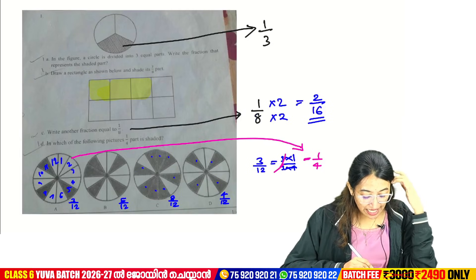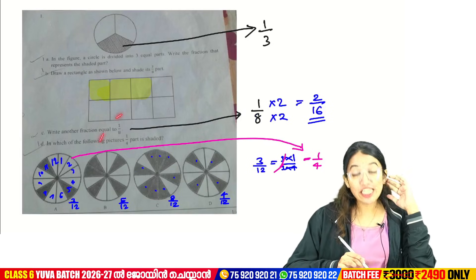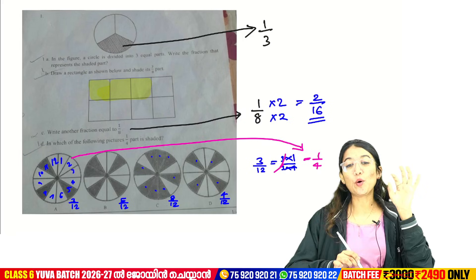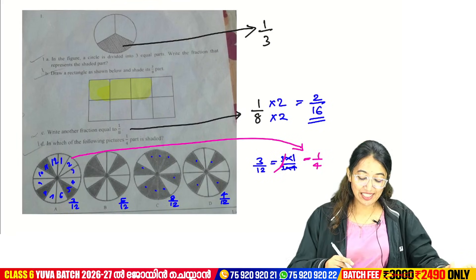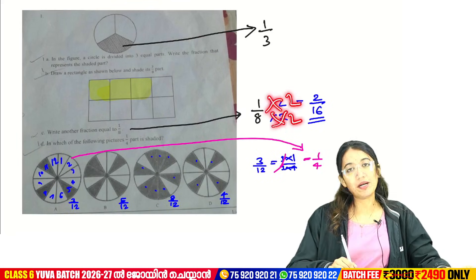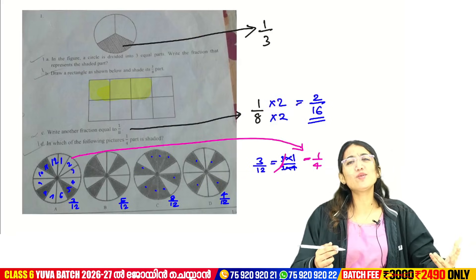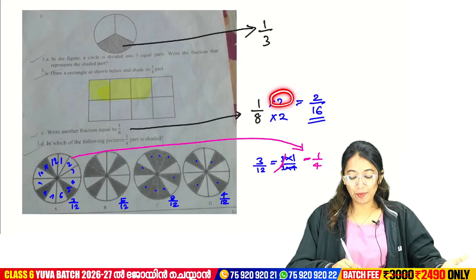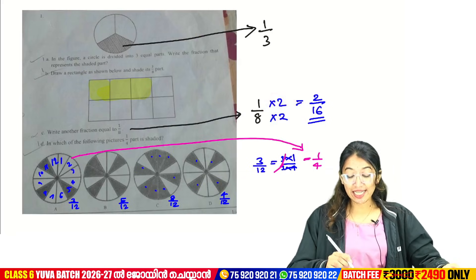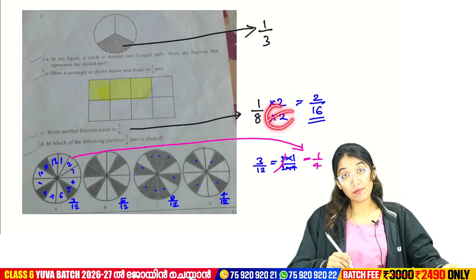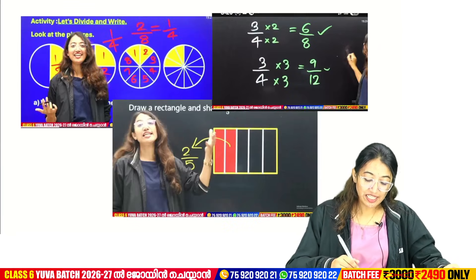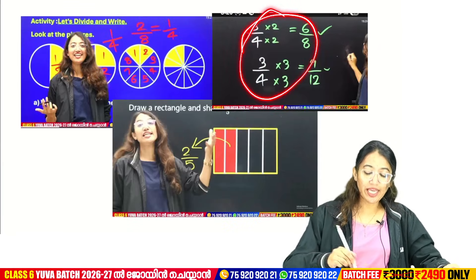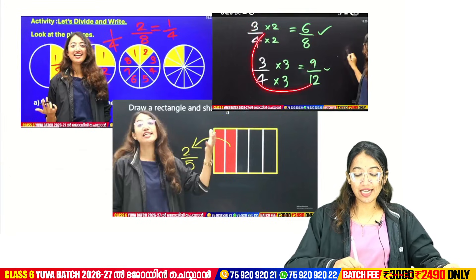Write a fraction equal to 1 by 8. When you write a fraction, you can multiply by 1 by 8. If you multiply it with a number, you get 2 by 16. If you have any questions about this, we will discuss them.